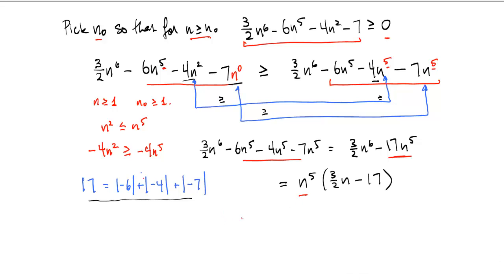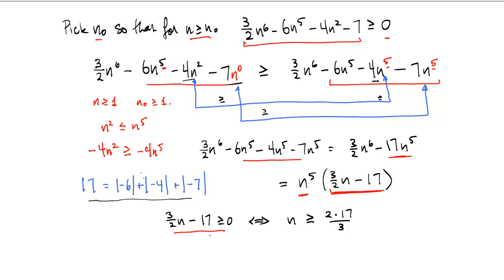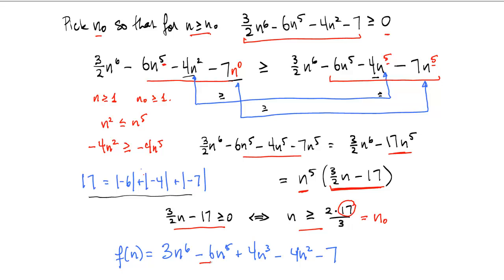We can now factor out n⁵. Since n is positive, n⁵ is positive, so we just need the second factor, 3/2·n − 17, to be ≥ 0. Solving, we need 3/2·n − 17 ≥ 0, which holds if and only if n ≥ 2×17/3. This is the value we select for n₀. Here 17 is the sum of the absolute values of the negative coefficients in f, and 3 is the coefficient of the leading term. We have now derived the values of n₀ and c.